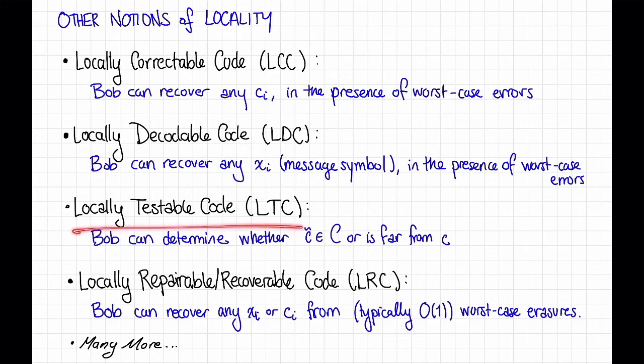There's also a notion of a locally testable code, where Bob just wants to make a few queries and figure out whether or not the code word seems legit. And there's another notion called a locally repairable code, or locally recoverable code, or LRC, in which Bob wants to recover xi or ci, depending on the context, from just a few queries, but in the presence of worst-case erasures rather than worst-case errors.